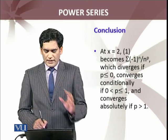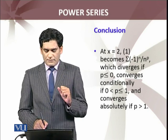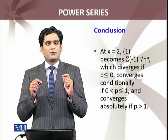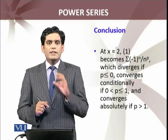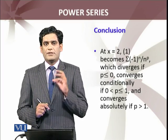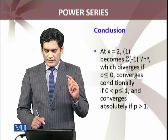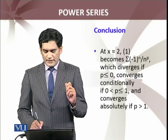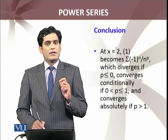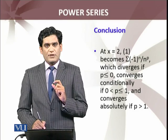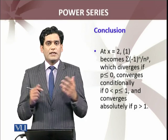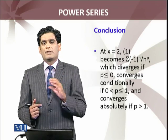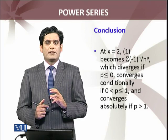If we consider x equals 2 for the power series in the third example, the series becomes summation (-1)^n over n^p. We have discussed this series in detail, which I also called harmonic series. This series diverges if p ≤ 0, converges conditionally if 0 < p ≤ 1, and converges absolutely if p > 1. Because this is alternating series, (-1)^n over n^p, we have discussed this series in detail.